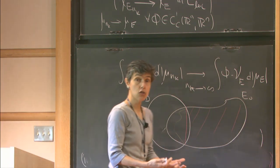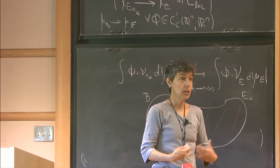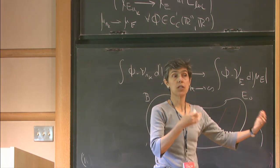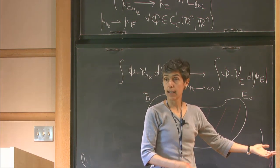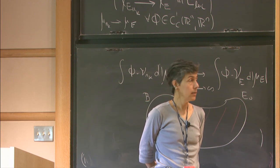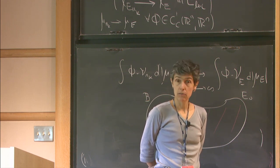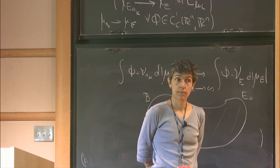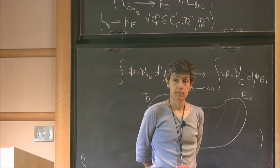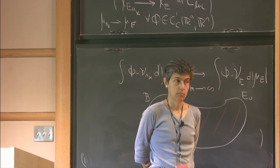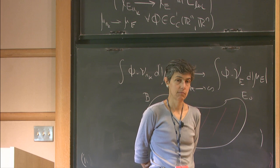The minimization problem I started with was: does the minimizer exist? In the C1 class it doesn't; in the class of sets of locally finite perimeter it does exist.